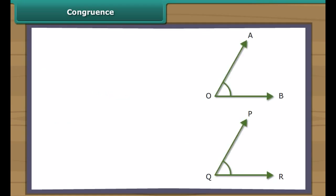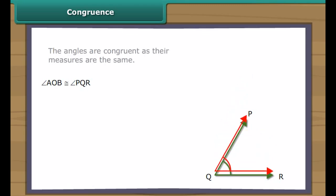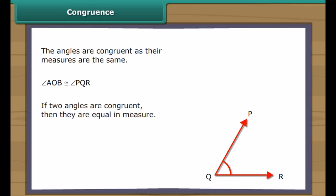Here are two angles — angle AOB and angle PQR. Let us find out if they are congruent. The angles are congruent as their measures are the same. It is also true that if two angles are congruent, then they are equal in measure.